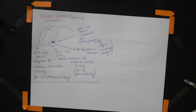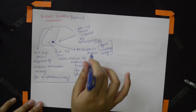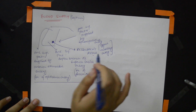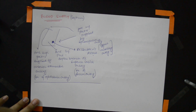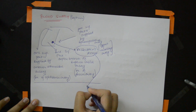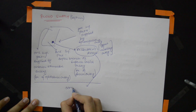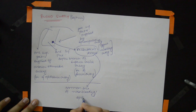Now let's talk about the Kieselbach's area, also called Kieselbach's plexus or Little's area. This is the common site of nose bleeding, or epistaxis.